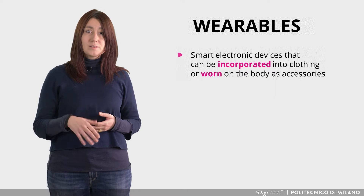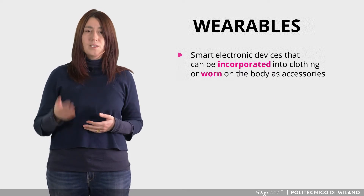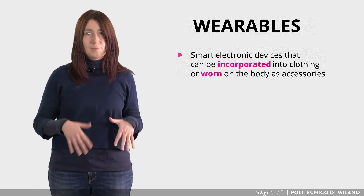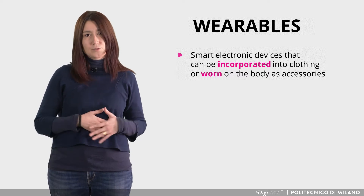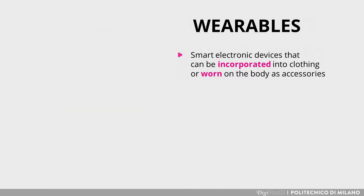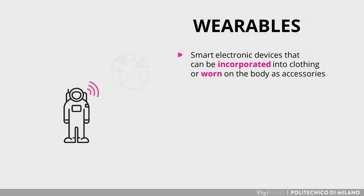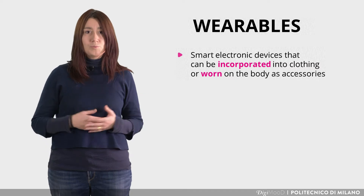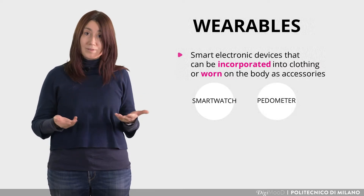Wearables are smart electronic devices that can be incorporated into clothing or worn on the body as accessories. To help you understand what a smart garment is, think about astronaut's clothing — sensors constantly monitor their physical state and transfer information about their health. A smart accessory could be a smartwatch or a pedometer.